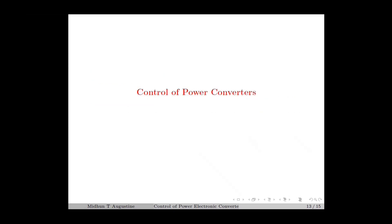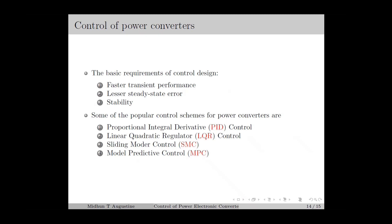Next, we move on to the control of power converters. The basic requirements of control design are faster transient performance, lesser or acceptable steady-state error, and stability. Some popular control schemes used for power converters are: the proportional-integral-derivative or PID control, the linear quadratic regulator or LQR control, the sliding mode control or SMC, and the model predictive control or MPC. Among these, the PID controller is a classical control approach that uses the frequency domain model or transfer function for controller design. The remaining three are modern control approaches based on state-space models. In the last five or six lectures of this series, we will focus on the design and simulation of these control schemes for power converters.